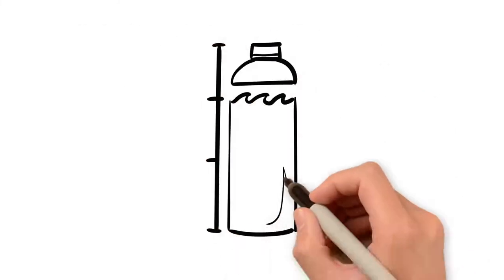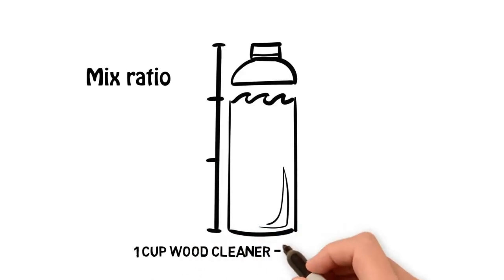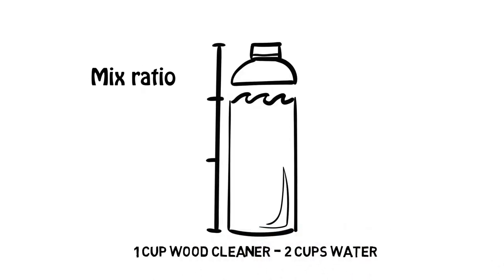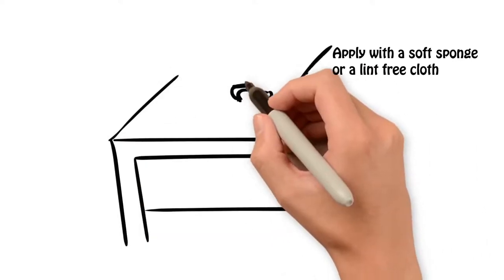Use the product sparingly in a ratio of 1 cup wood cleaner to 2 cups lukewarm water and apply with a soft sponge or a lint-free cloth.